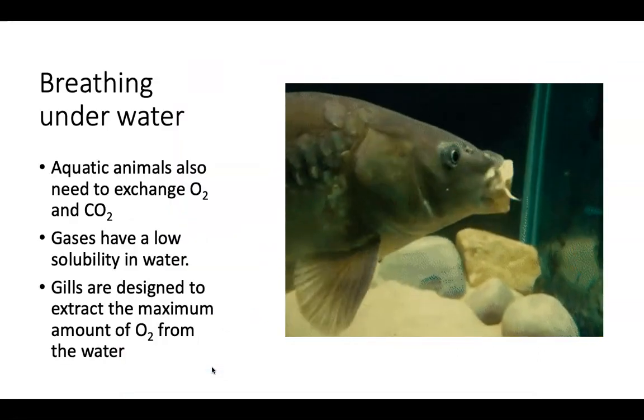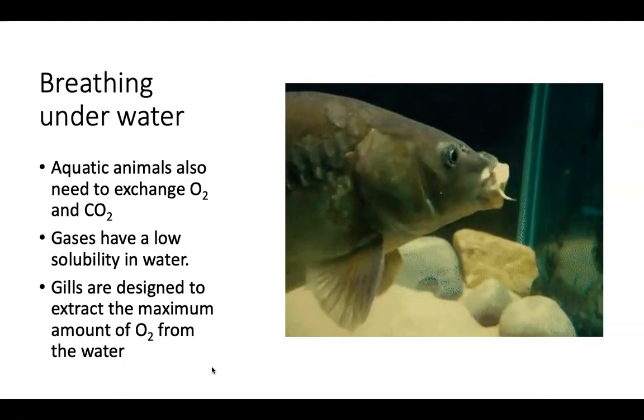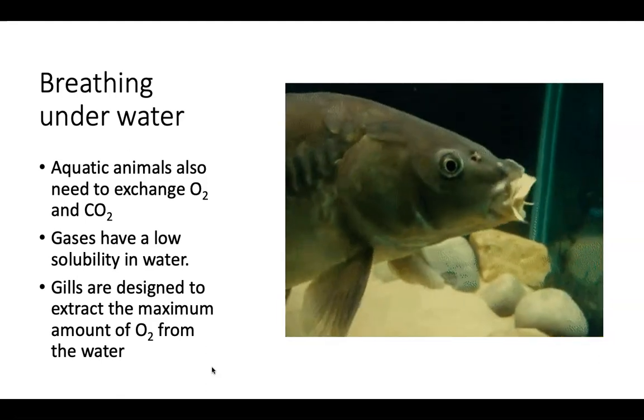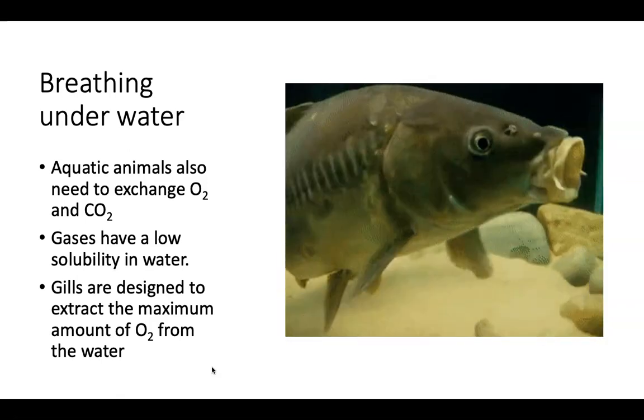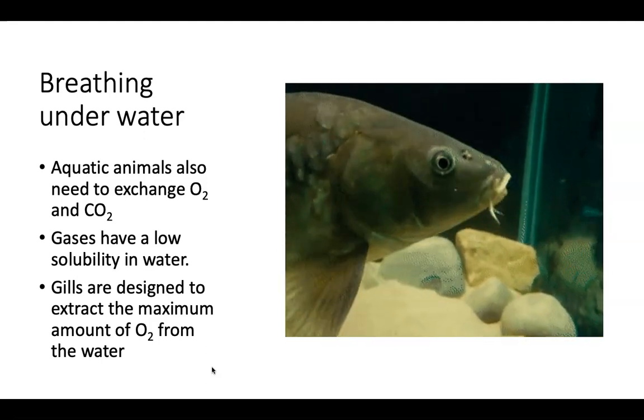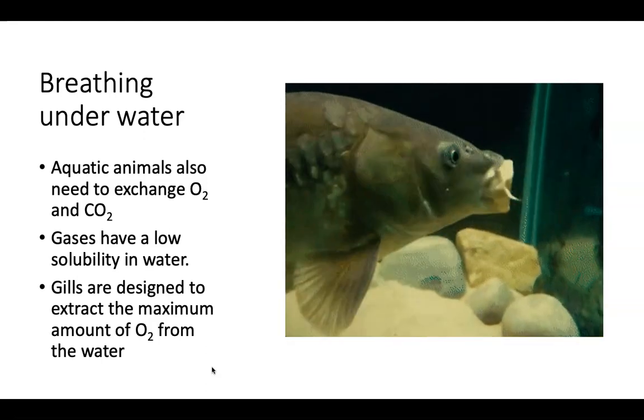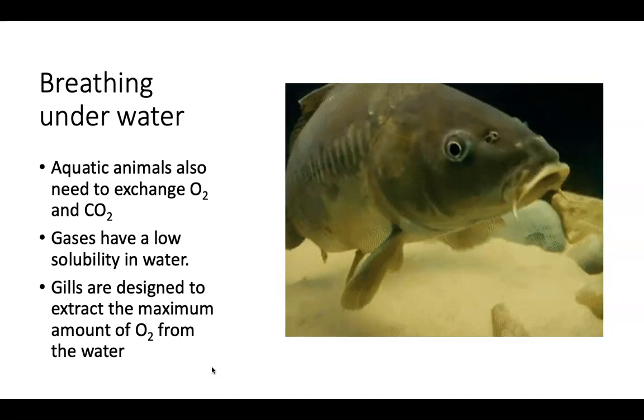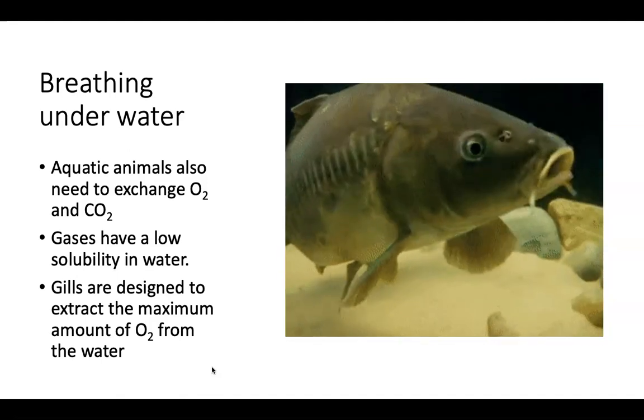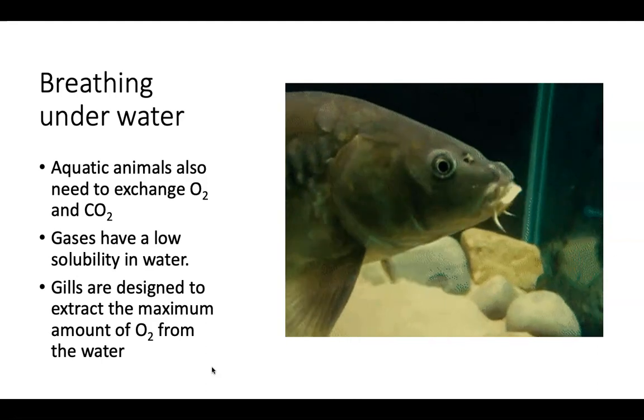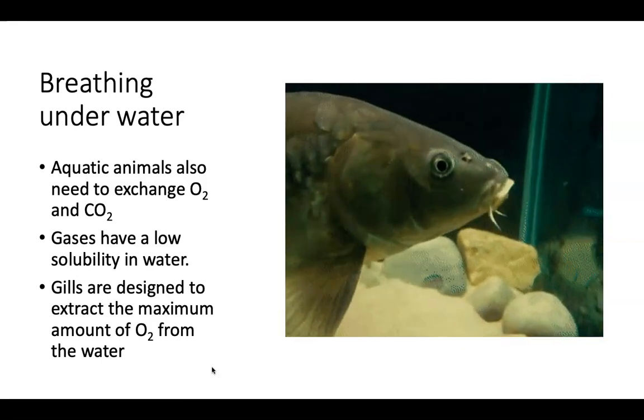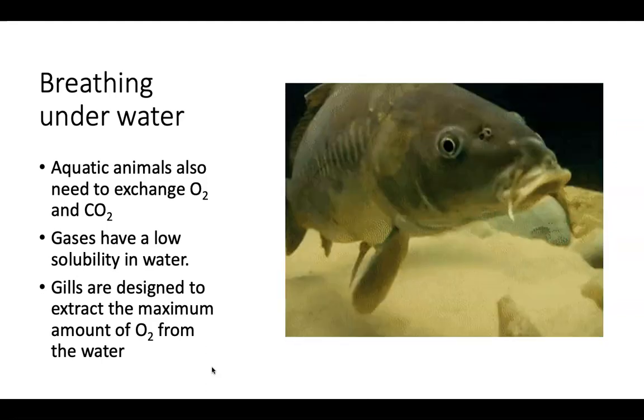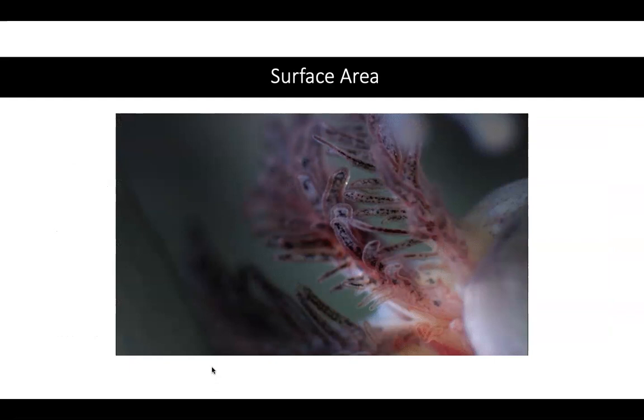Now, let's look at fish and how fish breathe. So fish are aquatic animals, but aquatic animals also need to exchange oxygen and carbon dioxide. Now, we mentioned before, oxygen and carbon dioxide can dissolve into water environments or those moist surfaces in the lungs. And fish live in that water environment. But the gases in water generally have a lower solubility than they do in the air. And so what fish have adapted to have are these gills. And the gills are designed to extract the maximum amount of oxygen out of the water as is possible.